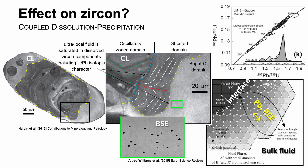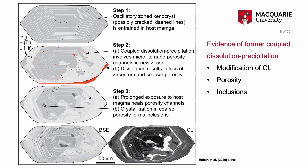Note that microstructural evidence of the very fine porosity is very difficult to see in cathodoluminescence images and it requires high resolution backscattered electron imaging to see the porosity. To summarise, the key microstructural evidence for modification of zircon by coupled dissolution-precipitation are modification and truncation of internal textures observed in cathodoluminescence, preservation of porosity and epigenetic inclusions best observed in backscattered electron imaging.